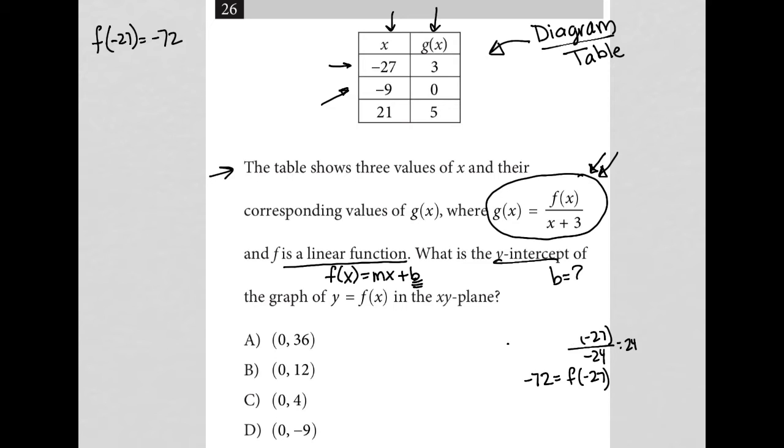Let's do that again for the next row here, because this is not going to help me find a y-intercept. Let's try the next row - negative 9, 0. So that's going to say that g of x is 0 when we have f of x is negative 9. So it becomes f of negative 9 over negative 9 plus 3. This becomes 0 equals f of negative 9 over negative 6.